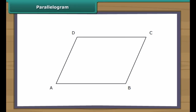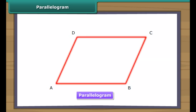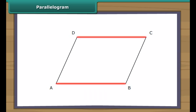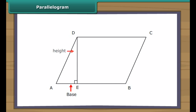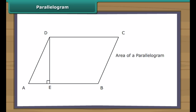Parallelogram. Students, see the following figure. Can you name the figure? It is a parallelogram. A parallelogram is a four-sided closed figure having opposite sides parallel to each other. Can we find the area of this figure? Yes, by using the formula for the area of a parallelogram. For this, you require the measures of the base and the distance between the corresponding parallel sides. The area of a parallelogram is the product of its base and the distance between the parallel sides, that is, the height of the parallelogram.